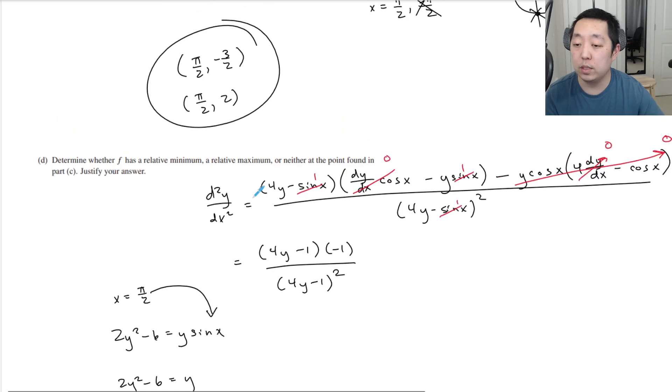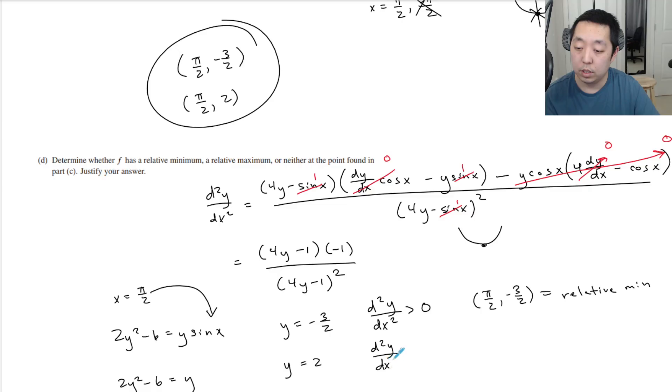So let's plug in for this one here. Now that we know the y. So when y is equal to negative three halves, the second derivative is negative negative positive is greater than zero. So that means it's concave up. That means the point pi over two minus three halves is a relative minimum because it's concave up basically. It's a concave up with a horizontal tangent line. And then when y equals two, that's eight. That's positive. That's negative. That makes that negative and the bottom is always positive. So that's negative. So that means pi over two, two is a relative max.